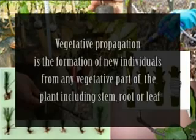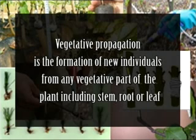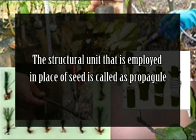Dear students, welcome. Today I am going to discuss vegetative propagation — natural means and methods. Vegetative propagation is the formation of new individuals from any vegetative part of the plant, including stem, root, or leaf. The structural unit that is employed in place of seed is called a propagule. Vegetative propagation can be natural or artificial.